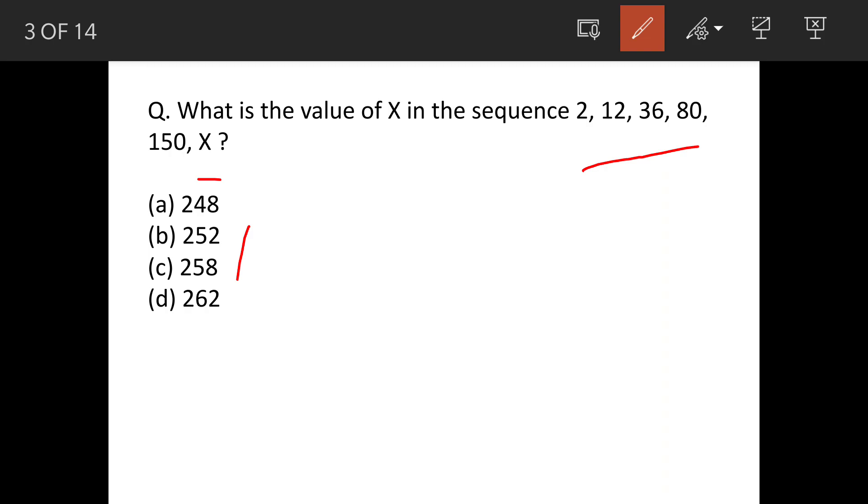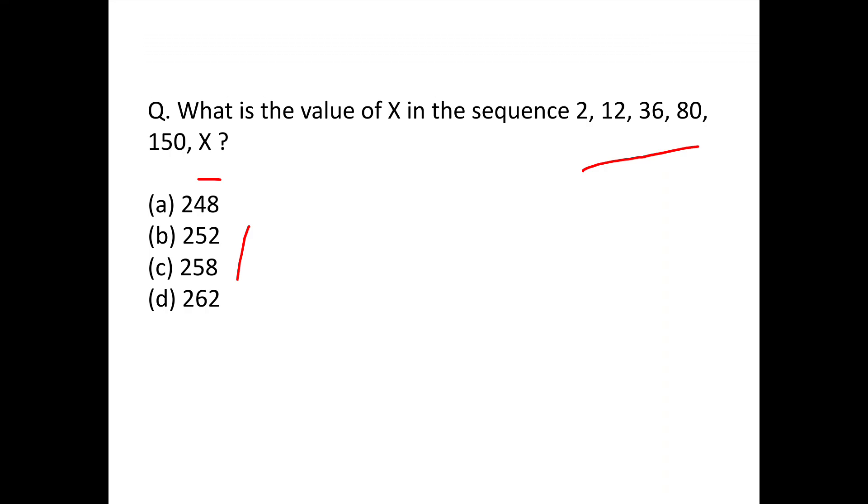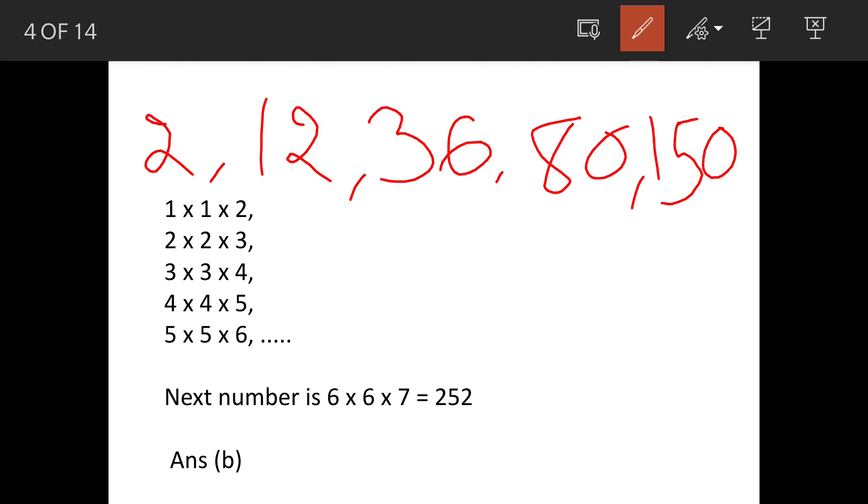So we'll factorize these numbers. First one is 2, so 1 × 1 × 2. Then second one is 12, so 12 could be 2 × 2 × 3. Then we have 36, so 3 × 3 × 4, and so on.